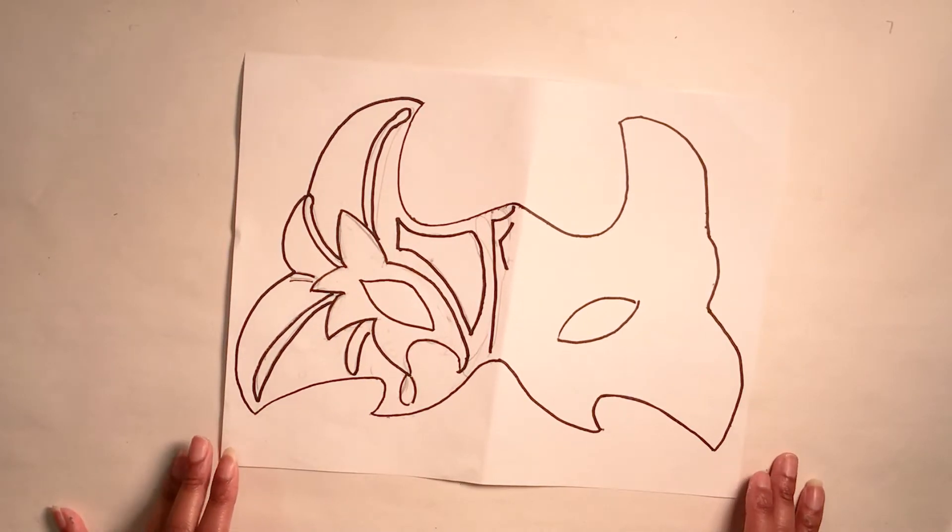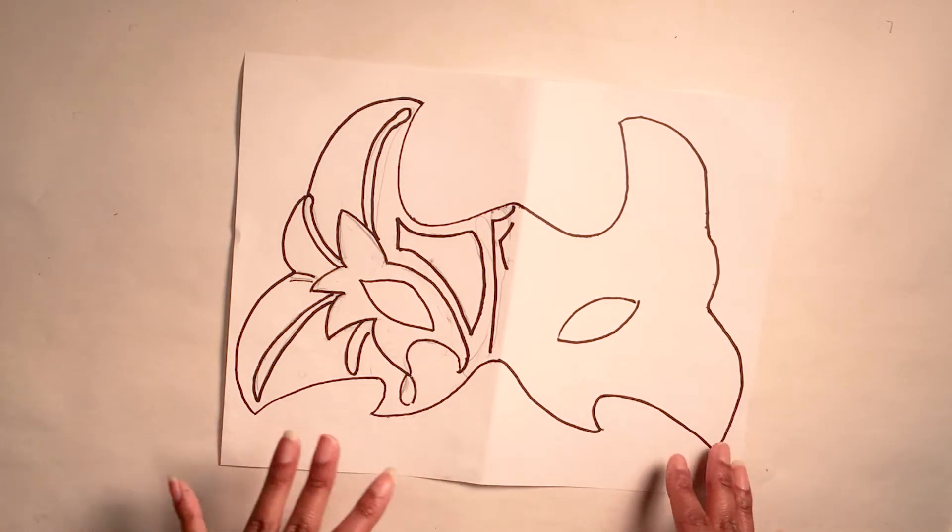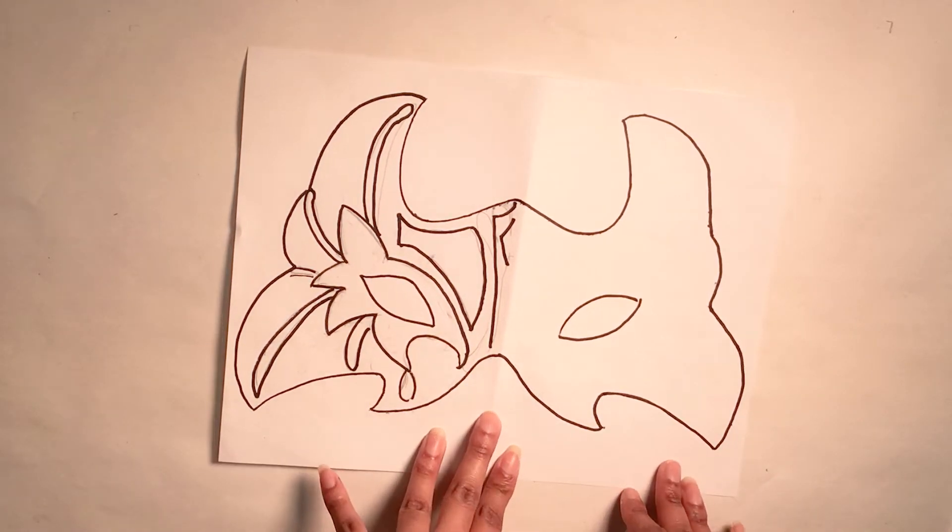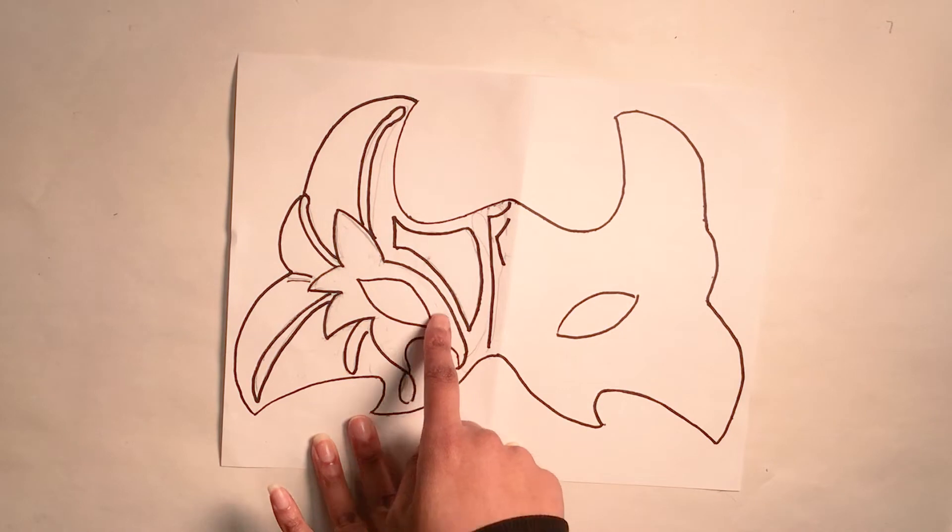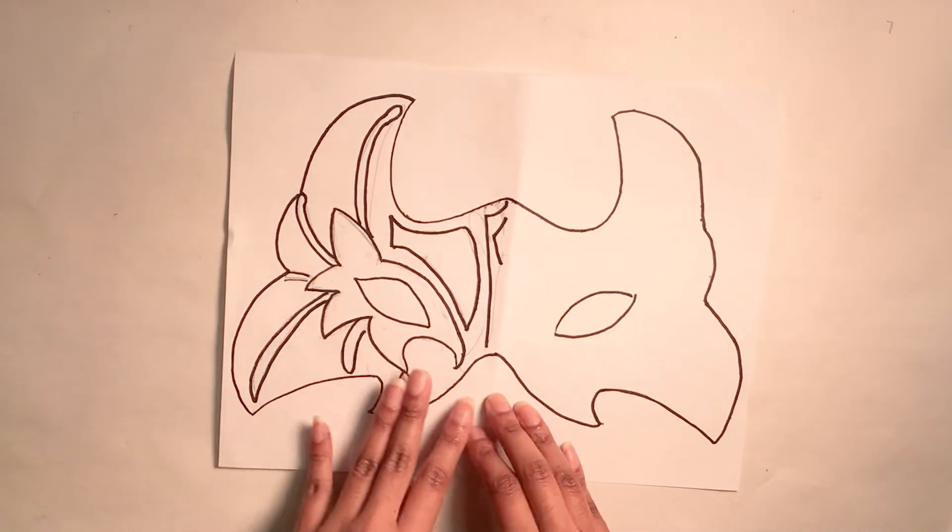When it comes to thinking about decorations you want on your mask, I recommend using the template to make a design plan and then draw out your designs there. For example, here you can see that I have this flower-like shape to highlight the eye and also because it looks really cool.